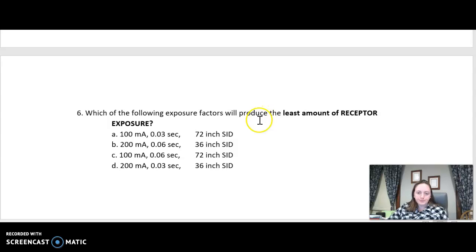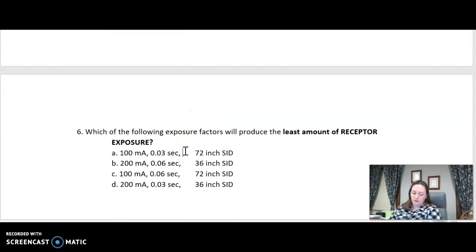Moving down to the last one. This one is asking me for least receptor exposure. So I'm going to go back to your MAS numbers here. So it's the same MAS numbers that I just used for the first one. So it's three, 12, six and six. What factor has changed though? I now have two with 72 inch options. So the question is asking me for least receptor exposure. That means lowest MAS, which automatically I'm going here to the number three. But then I just have to double check that my SID is also a player. So lowest MAS with an increased SID. This A is going to give you the least amount of receptor exposure.